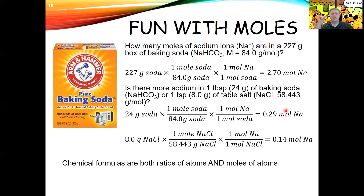Chemical formulas like NaCl describe both a ratio of atoms and of moles. NaCl says you have one mole of sodium for every mole of chlorine, one sodium atom for every chlorine atom, or one dozen sodium atoms for every dozen chlorine atoms. It's a ratio, but it also tells you how many atoms are in a specific formula unit.